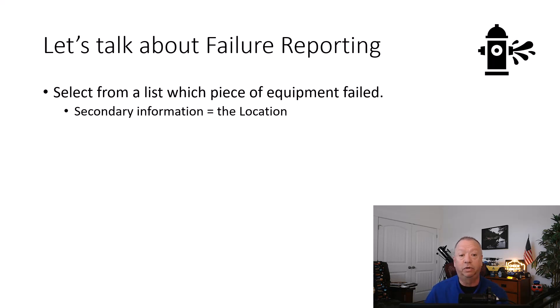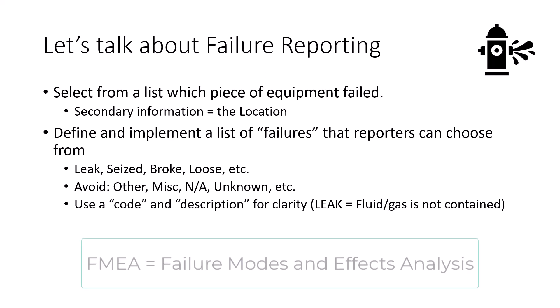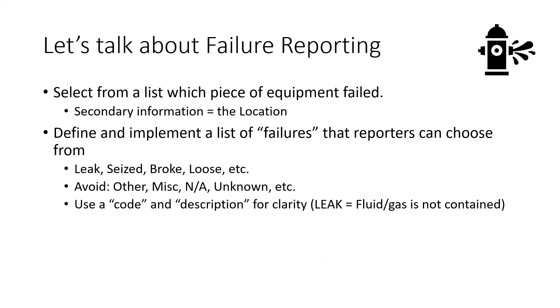Having a location defined for the equipment is also important. Your next step would be to create a list of failures that your teams can agree upon and is the only source of failure selections. This needs to be a reasonable list that's not too long yet describes most issues your team may run into. This list may come from an FMEA that you've done in the past, or some other failure library source, maybe from an RCM study.